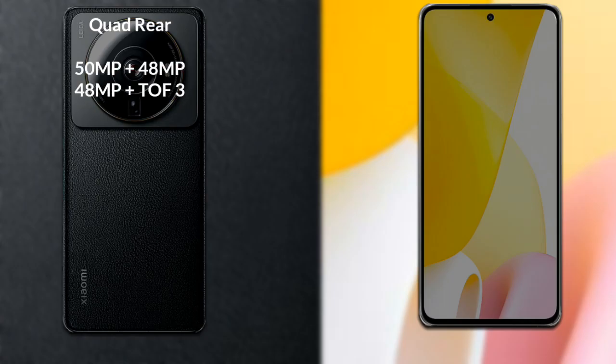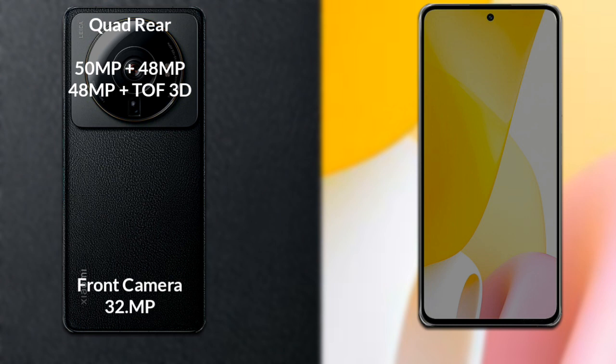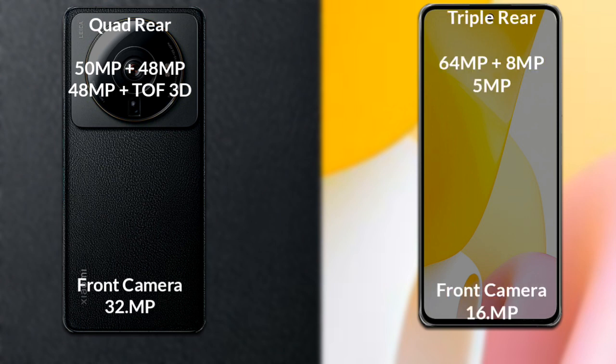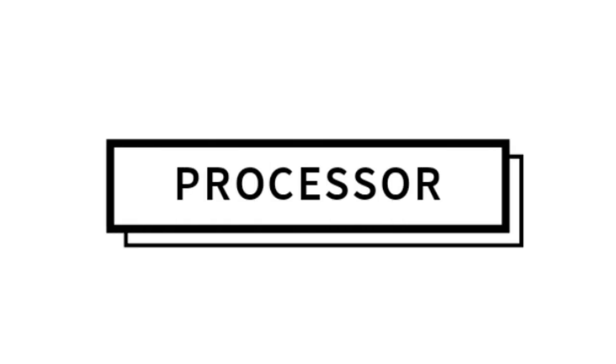If we compare the cameras of both phones: Xiaomi 12S Ultra has a rear quad camera — the primary camera is 50MP, secondary sensor 48MP, third sensor 48MP, and a fourth ToF 3D scanner. Its front camera is 20MP. Xiaomi 12 Lite has a rear triple camera — primary 64MP, secondary 8MP, third 5MP, and front camera 16MP.